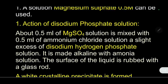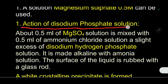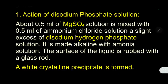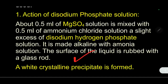The first test is the action of disodium hydrogen phosphate. About 0.5 ml of magnesium sulfate solution is mixed with 0.5 ml of ammonium chloride solution, and a slight excess of disodium hydrogen phosphate solution is added. It is made alkaline with ammonia solution. Then the surface of the liquid is rubbed with a glass rod. A white crystalline precipitate is formed in the test tube.